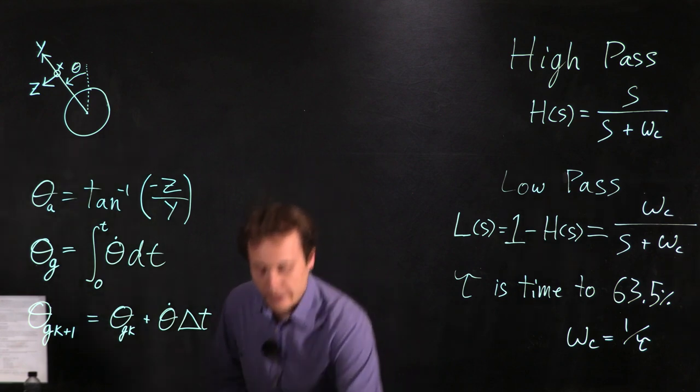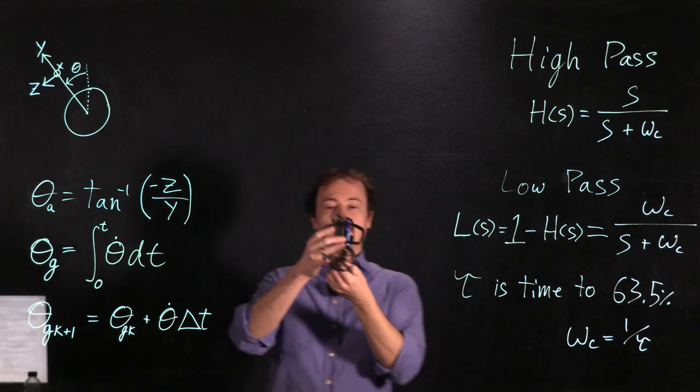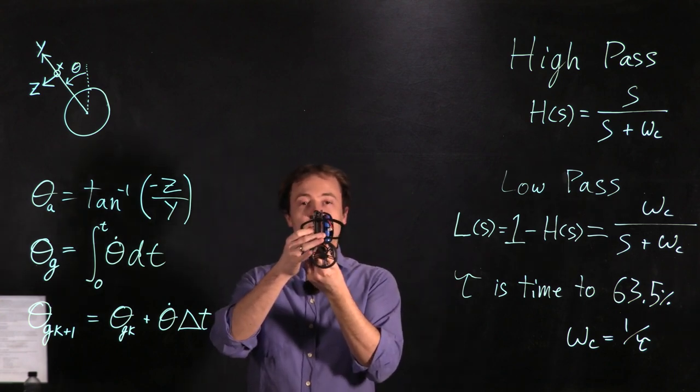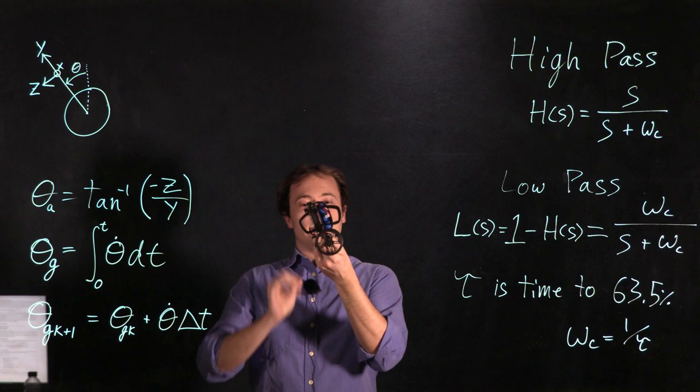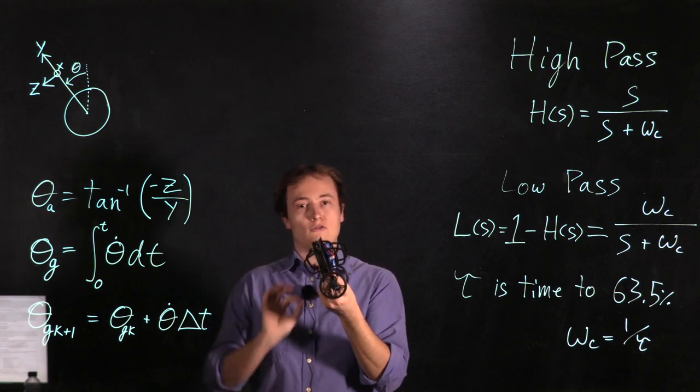The issue is we have a MIP which is going to be sitting upright and we're not going to be able to measure the exact angle of the body using just an accelerometer.